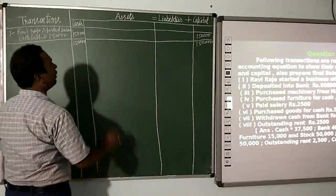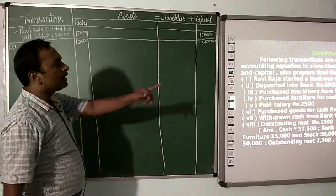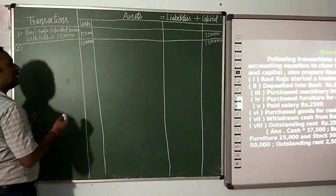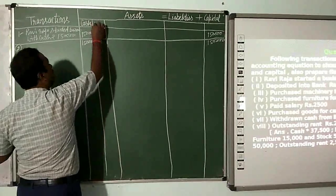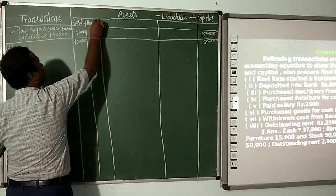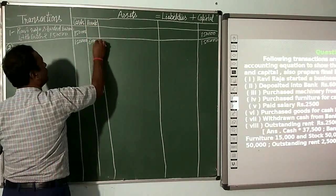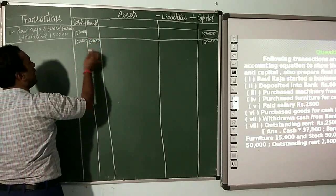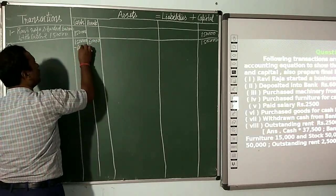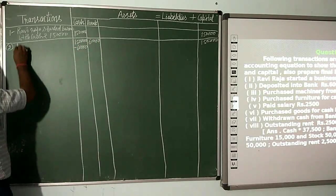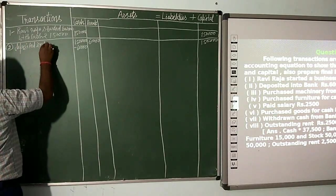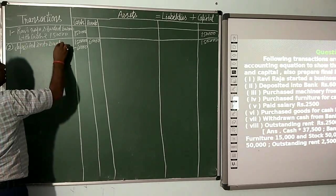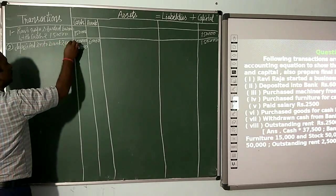Asset equals liability plus capital: assets = 1,50,000 and liability = 0. Second transaction: deposit into bank Rs. 60,000. Bank will be deposited with 60,000, so 60,000 will be reduced from cash.